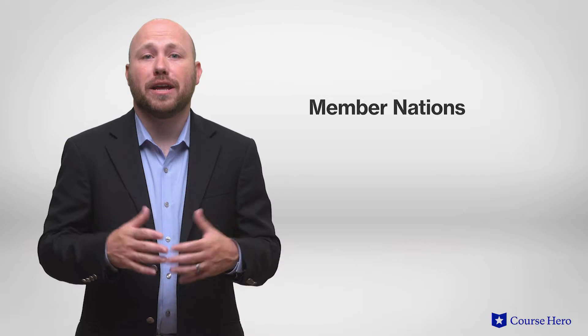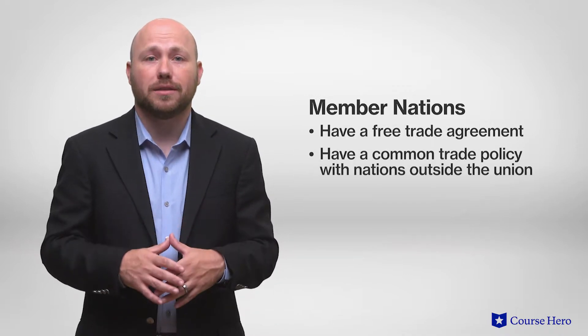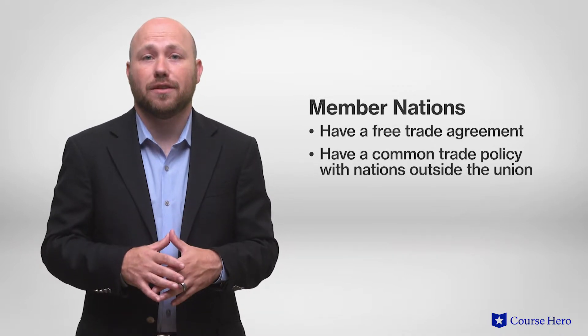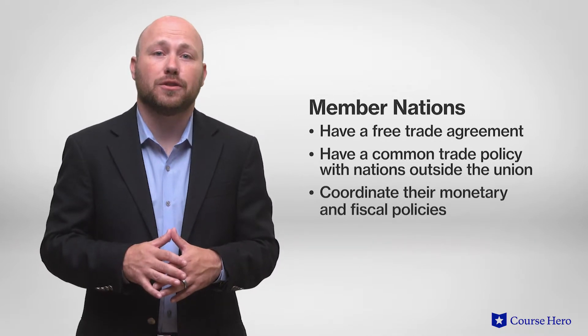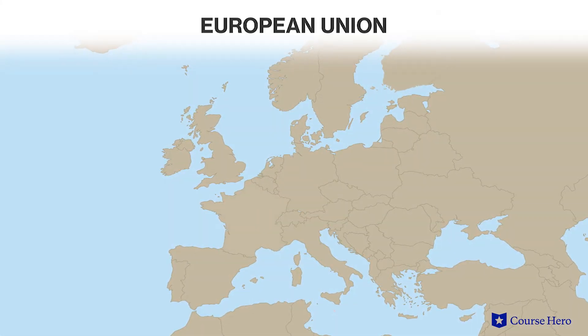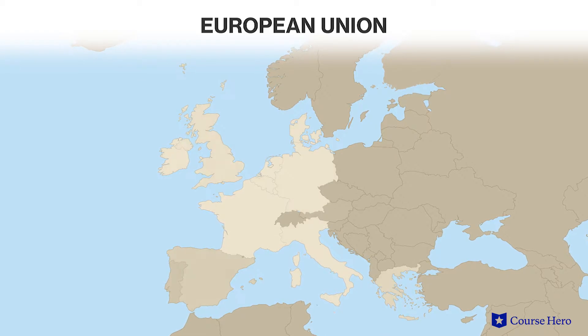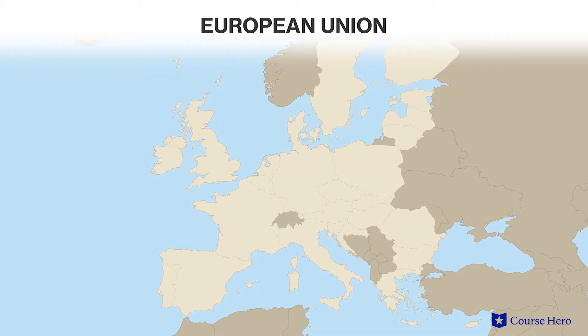A more integrated version of a free trade agreement is called an economic union. In an economic union, member nations often have free trade agreements, a common trade policy with nations outside the union, and coordinate their monetary and fiscal policies. The best example of an economic union is the European Union, a union of 28 European member states.